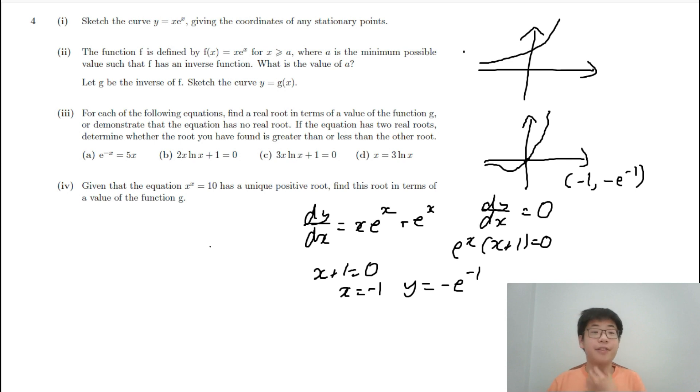The function f is defined by this where a is the minimum possible value such that f has an inverse function. Now, in order to have an inverse function, f has to be a 1-1 function. Therefore, this should be greater than its minimum point because before that, we will have two values for the same y and it's not 1-1. So this means that a = -1.